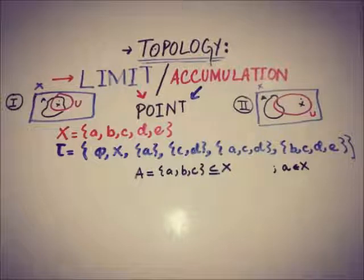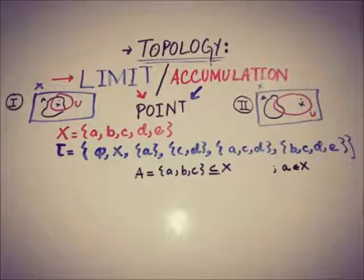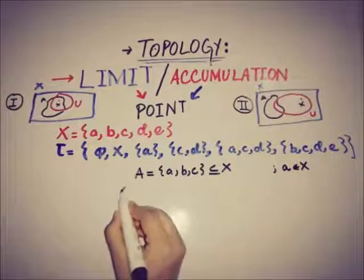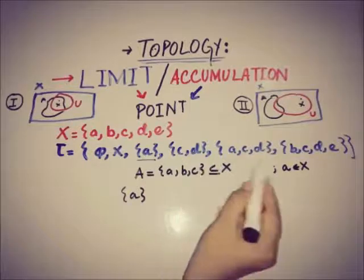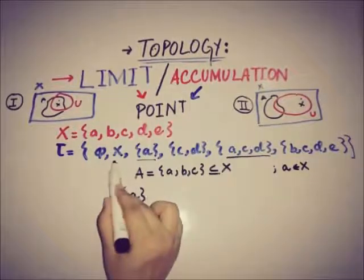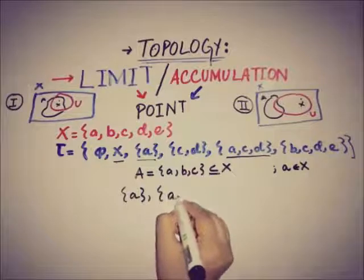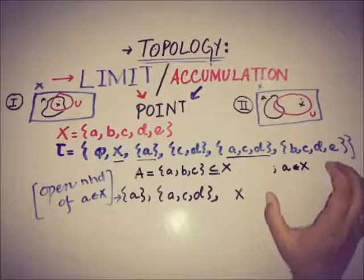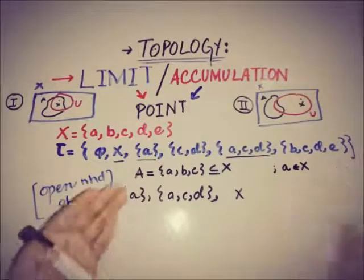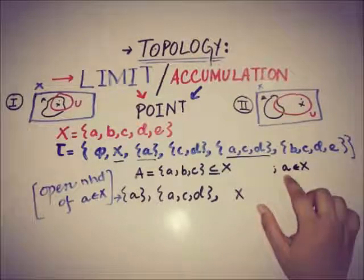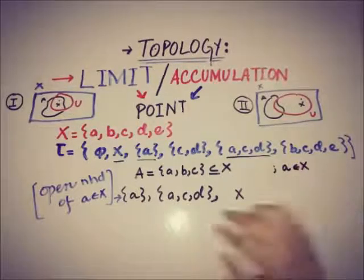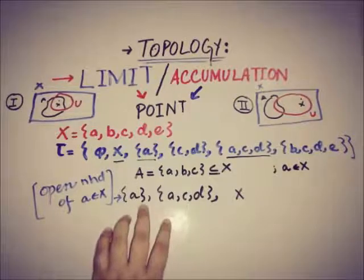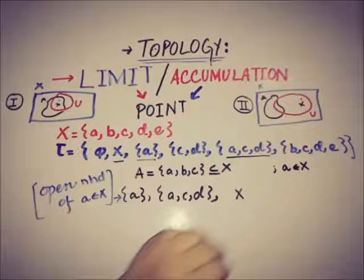Now we consider the open neighborhoods of point 'a'. The open neighborhoods of 'a' are: {a}, {a, c, d}, and X itself — there are three open neighborhoods of 'a'. For a limit or accumulation point, every open neighborhood of that point should intersect with A at some point other than 'a' itself.